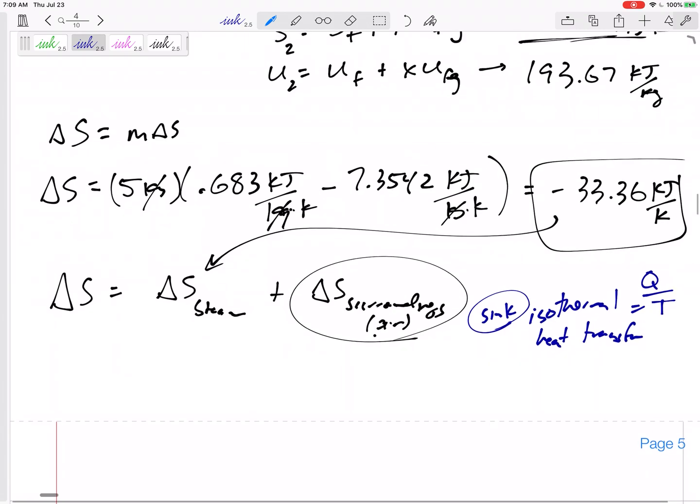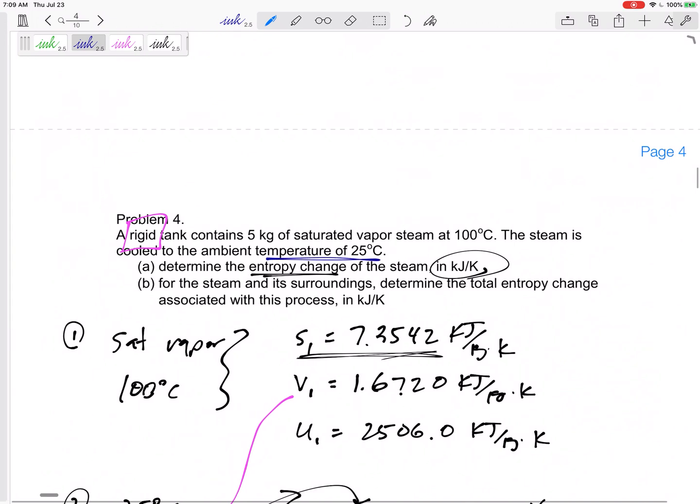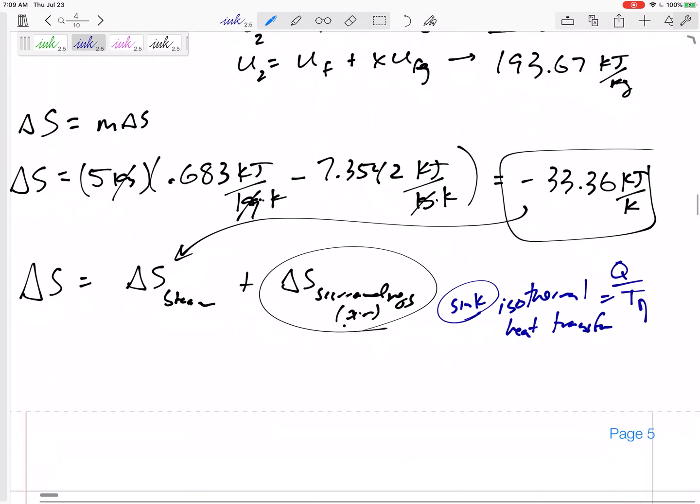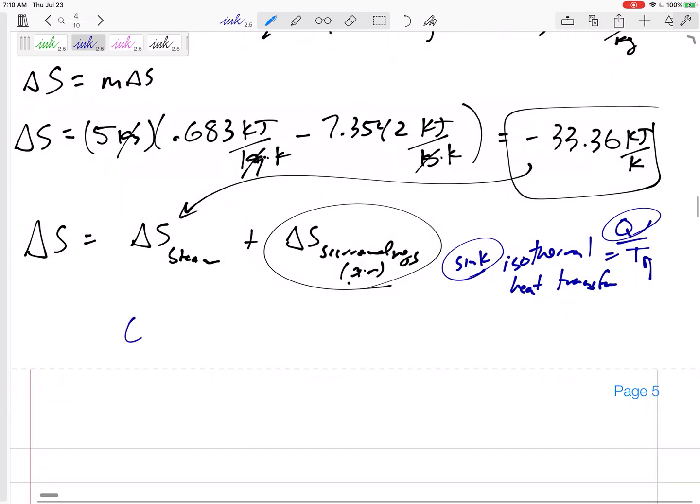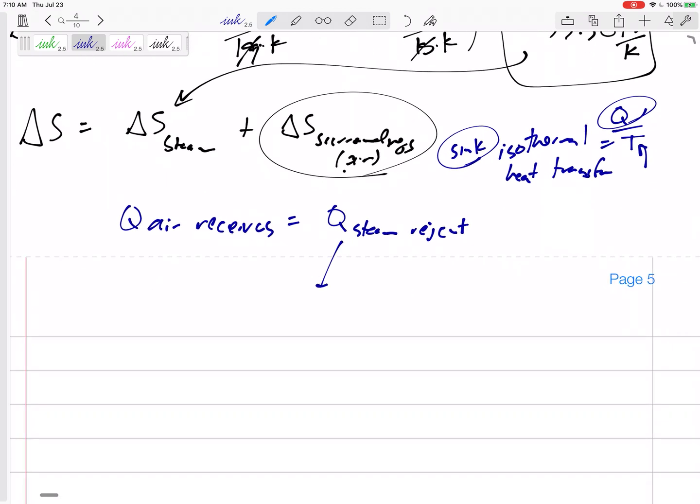Remember, that's an isothermal heat transfer: Q over T. The ambient temperature is 25 degrees C - change to kelvin. What is this Q? What is the Q that the air receives? Well, it's the same as the Q that the steam rejects. What is this Q that the steam rejects? We've got to go to conservation of energy.